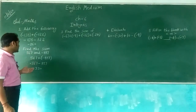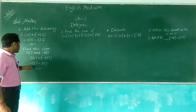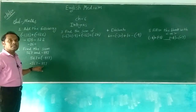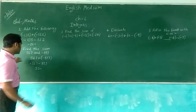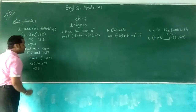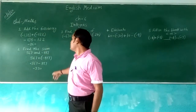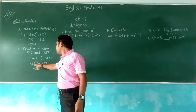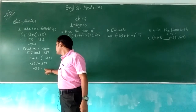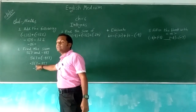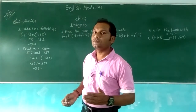Three hundred thirty will come as the answer. Here, the sign of 330: from both numbers, which number is greater? 897 is greater, and its sign is minus. So the answer's sign will be minus — minus 330. So plus 567 minus 897: 897 minus 567 equals 330, and the sign will be minus, so minus 330.